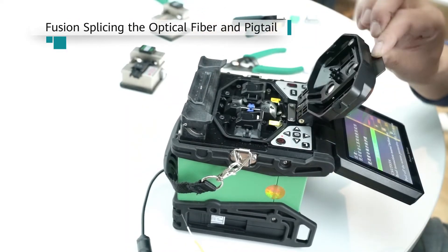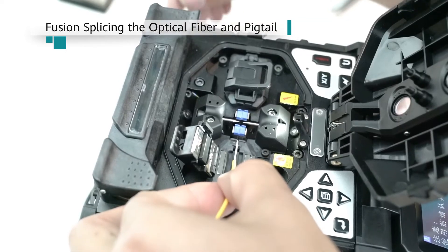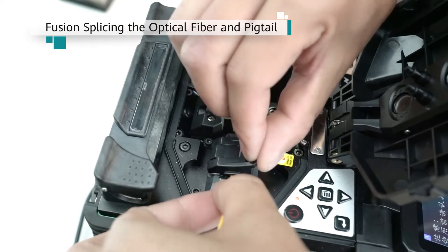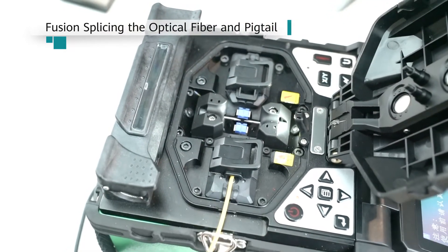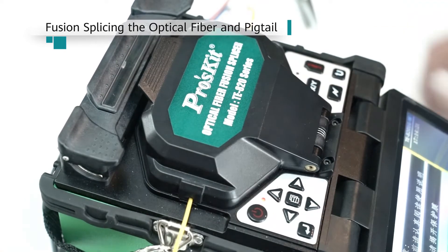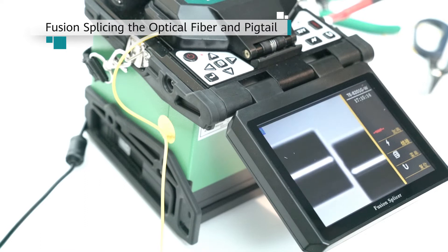Place the optical fiber and pigtail into a single core fiber fusion splicer. Use a 0.9 mm trough for the pigtail and a 0.25 mm trough for the optical fiber. Power on the fiber fusion splicer to fusion splice the optical fiber and pigtail.